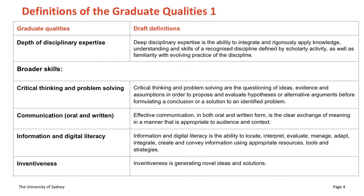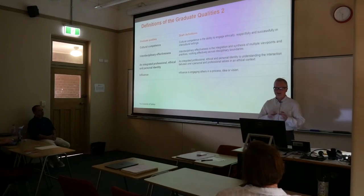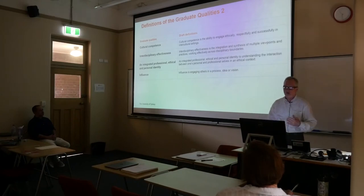We are unique in that we are going to determine the extent to which each and every student at the undergraduate level has actually assimilated the concepts inherent in the graduate qualities, including cultural competence. There are nine graduate qualities. Cultural competence is among them — I'll call it a draft definition at this stage, because the plan is that these definitions will be affirmed by the academic board at their last meeting on the 27th of November. Cultural competence is defined as the ability to engage ethically, respectfully, and successfully in intercultural settings.